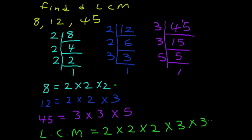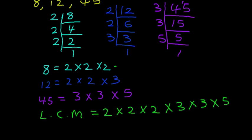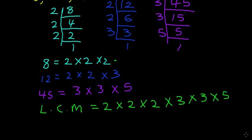So now we can use the calculator to calculate this. 2 times 2 is 4. 4 times 2 is 8. 8 times 3 is 24. 24 times 3 is 72. 72 times 5 is 360. So the LCM is 360.